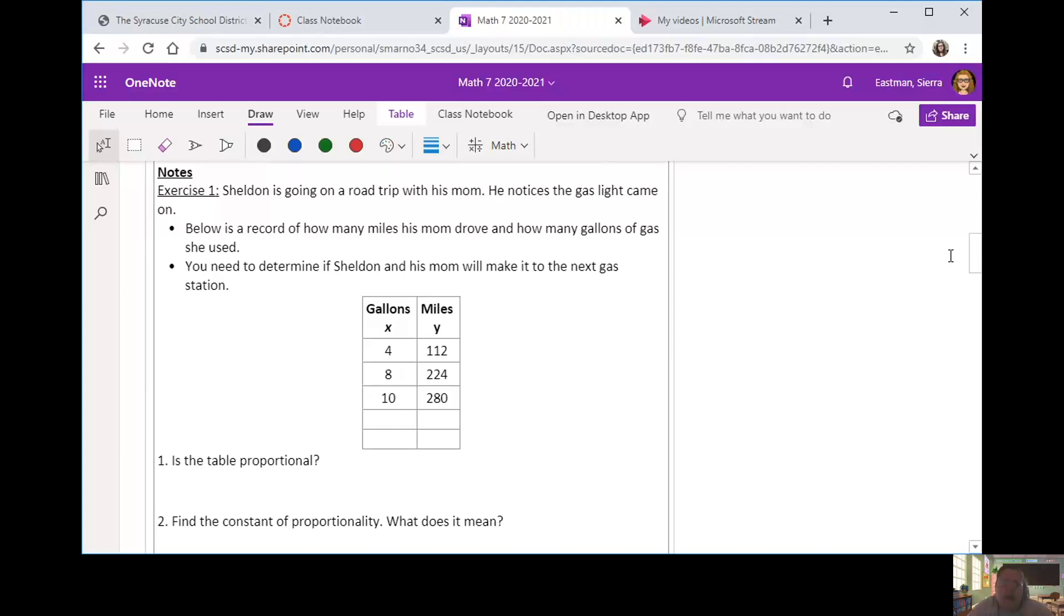So let's go ahead and start that. We have exercise one. Sheldon is going on a road trip with his mom. He notices a gas light came on, which means that the car is running out of gas. Below is a record of how many miles his mom drove and how many gallons of gas she used. You need to determine if Sheldon and his mom will make it to the next gas station. So the first part of that is determining if this table is proportional. Go ahead and pause your video here and tell me yes or no. We want to find that K again, our K column, and we want to see if they are all equal.